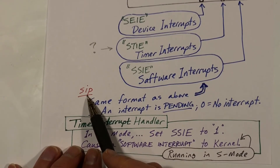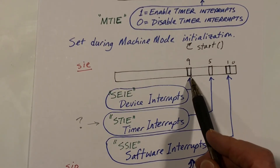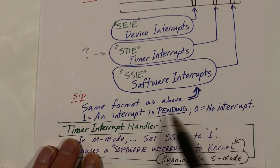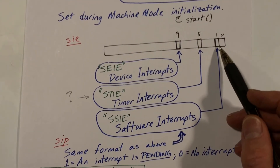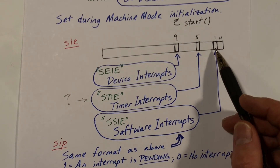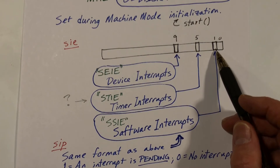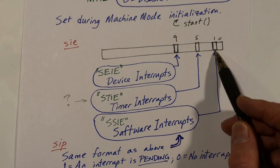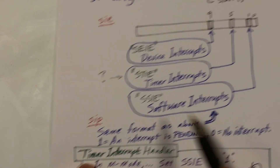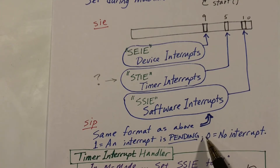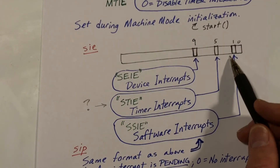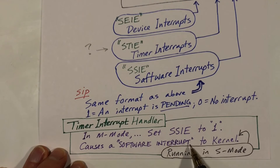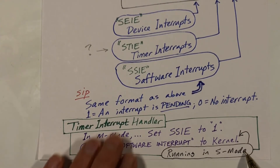We also have a register called SIP for interrupts pending. It has the same format: when a device is interrupting, that bit changes to one; when there are no interrupts, it's zero. We have the ability to force an interrupt to become pending by setting a bit to one, and that's what the timervec code, executing at machine mode, does — it sets the SSIE bit to one in the SIP register, thereby forcing the software interrupt to occur at the kernel level in supervisor mode.